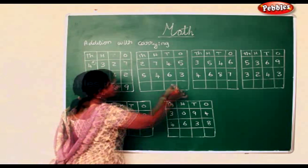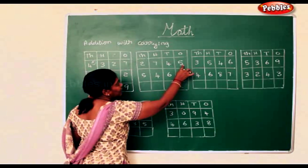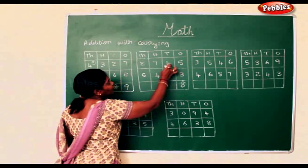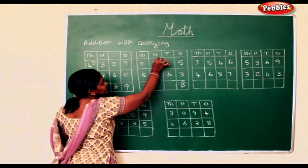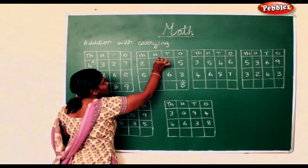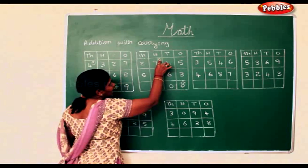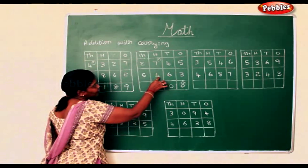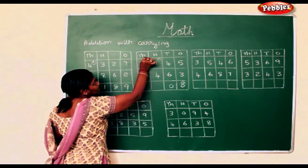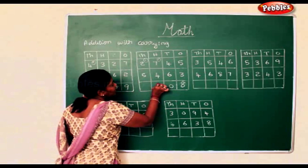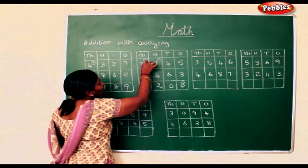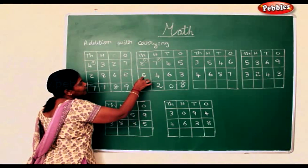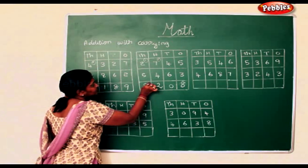Now again here. 5 add 3 is 8. 4 add 6 is 10. 1 add 7 is 8. 8 add 4 is 12. 1 add 2 is 3. 3 add 5 is 8.